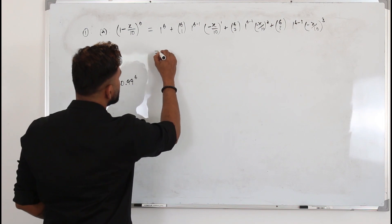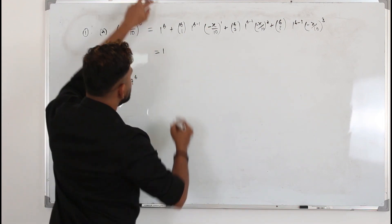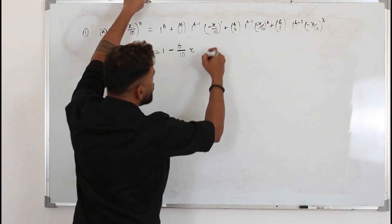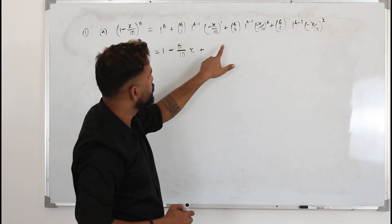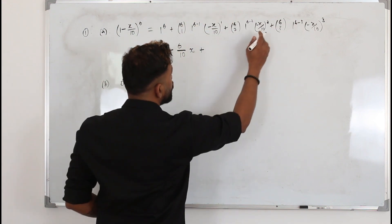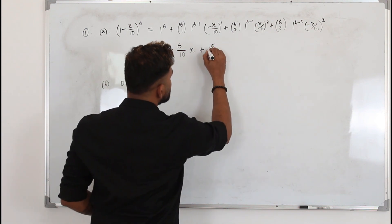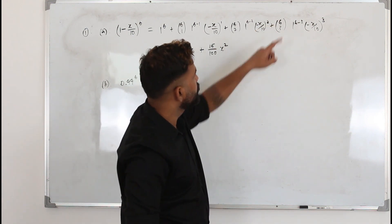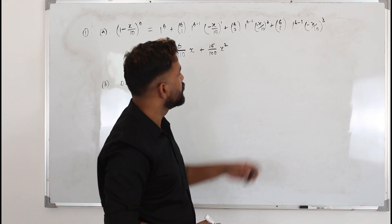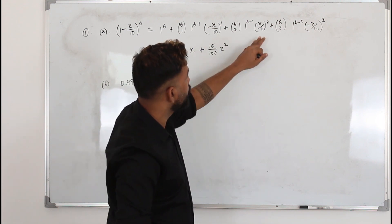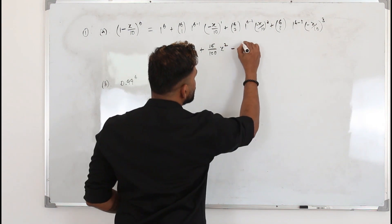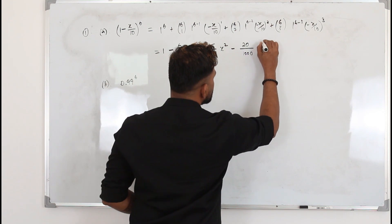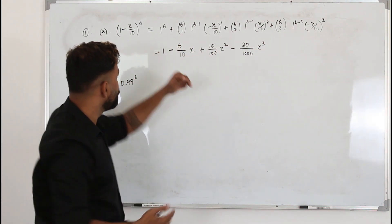Simplifying: 1 to any power is 1. The second term becomes −6/10 x. For the third term, 6C2 = 15, so we get 15/100 x², which is positive since we're squaring. For the fourth term, 6C3 = 20, giving −20/1000 x³.